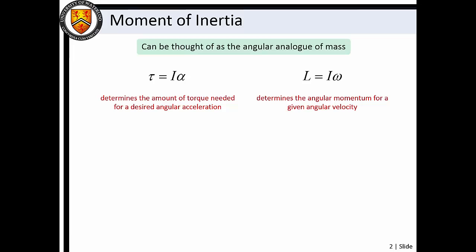The moment of inertia can be thought of as the angular analog of mass. It is the property that determines the amount of torque needed for a desired angular acceleration, and the property that determines the angular momentum of a given angular velocity.